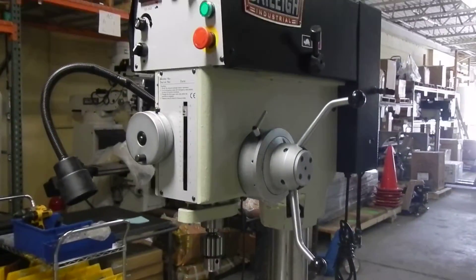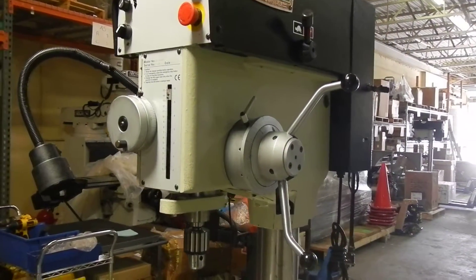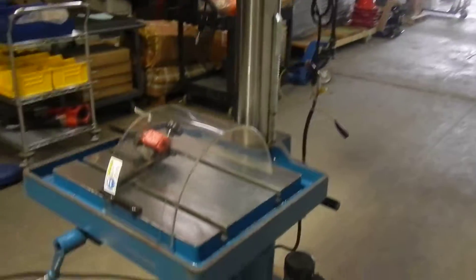Here we have a Ballet 20 inch variable speed drill press. It has automatic down feed and coolant system.